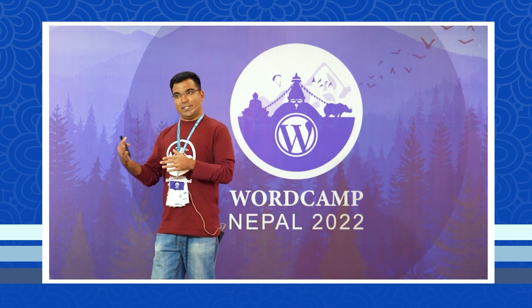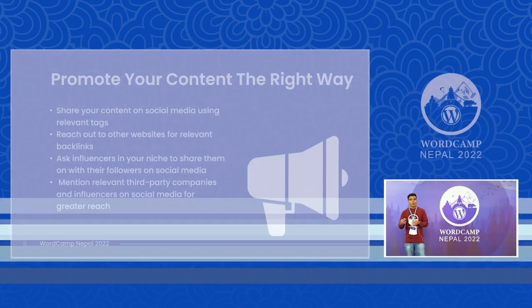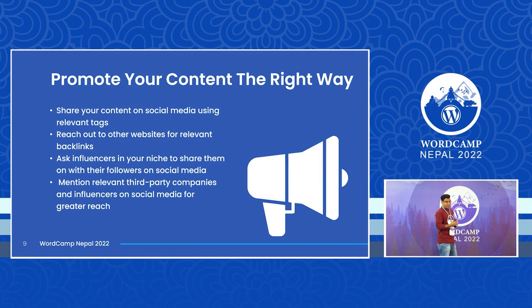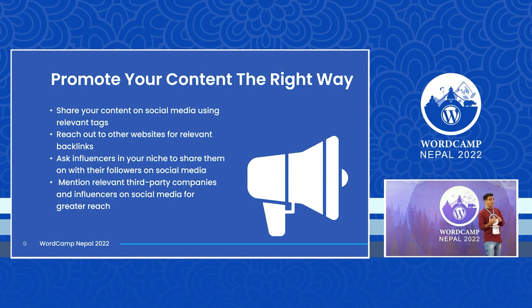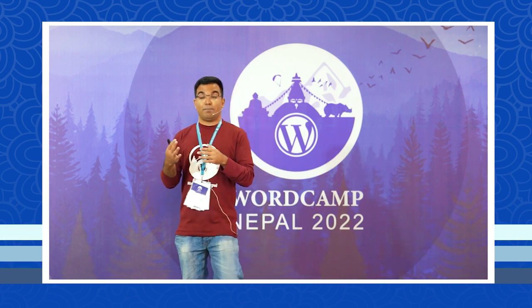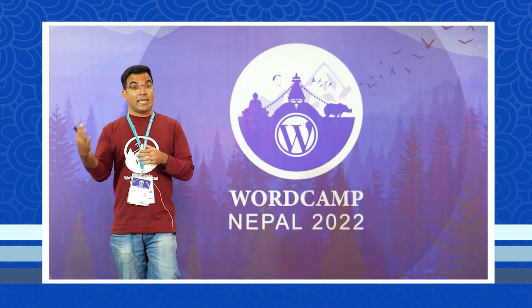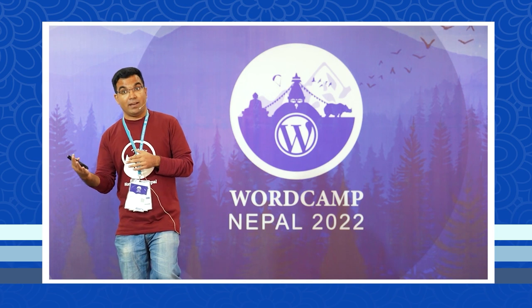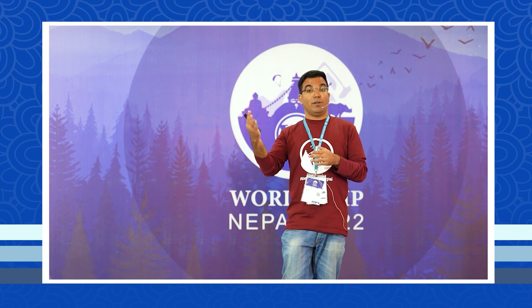Once you've written good content, you need to promote it. First, share your content on social media and make sure you use relevant tags. Most people use random tags, but tags serve a specific purpose — people on the internet search for those keywords on social media, and if you use the right tags, your content will appear and they will find it.